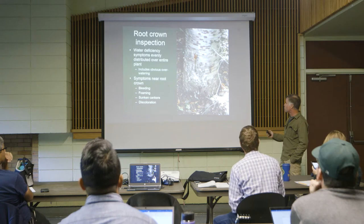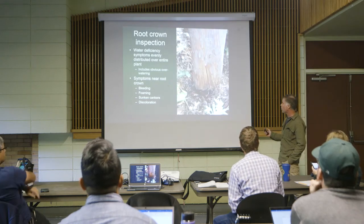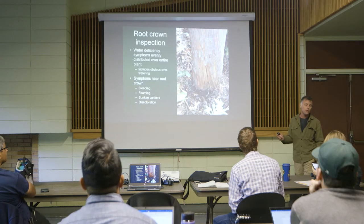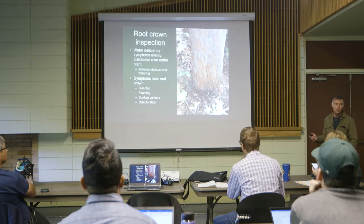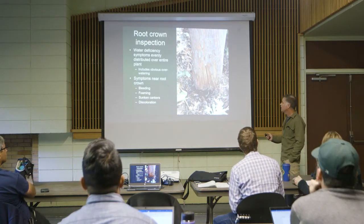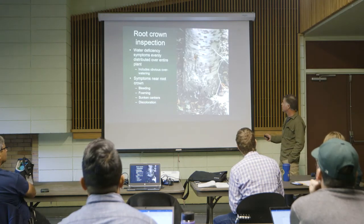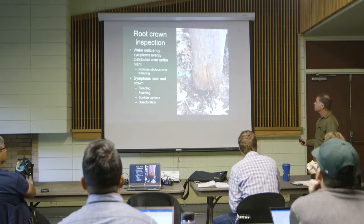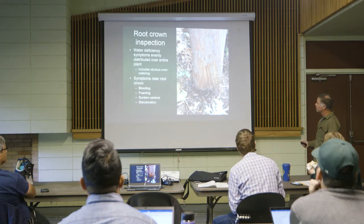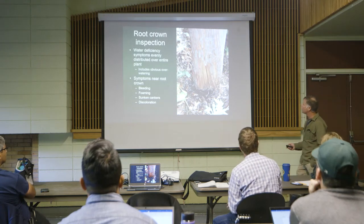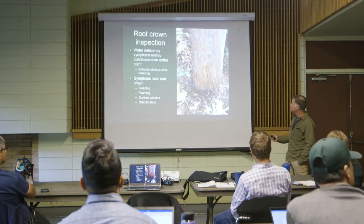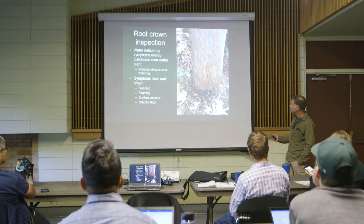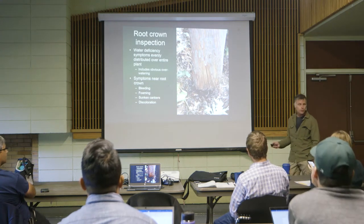We're also looking for things like this — Arbutus marina, or strawberry tree, getting a canker. The canker here is hidden under the bark — you'll see it when we peel back the bark. On this one you can pretty much trace the outline of the canker just looking at it. The vertical cracking is the wood drying out, and this eventually starts turning a darker color as it creeps up the side of the tree.